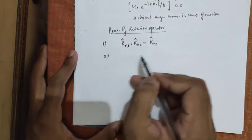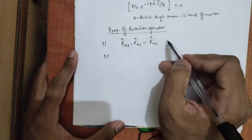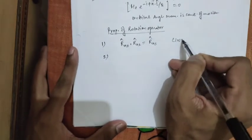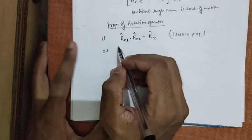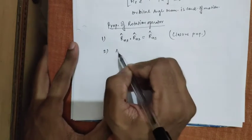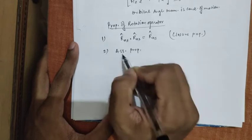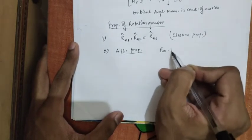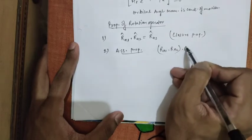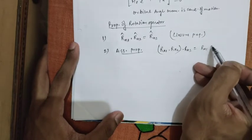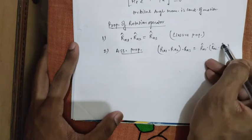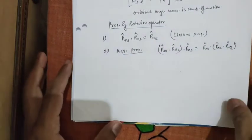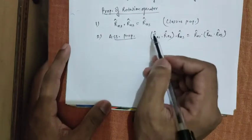This is a closure property. Second one is that they follow associative property, which is Rn1 dot Rn2 dot Rn3 equals to Rn1 dot Rn2 dot Rn3. So, they follow the associative property.